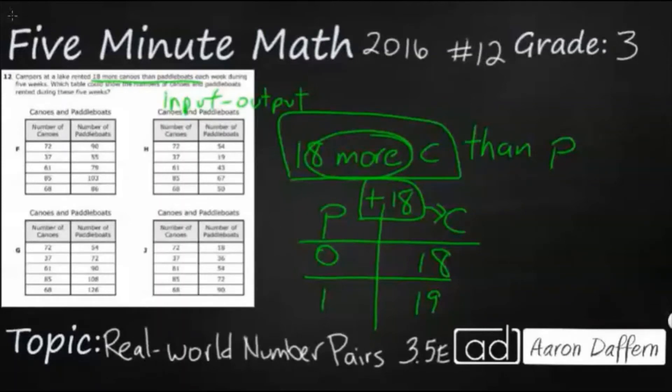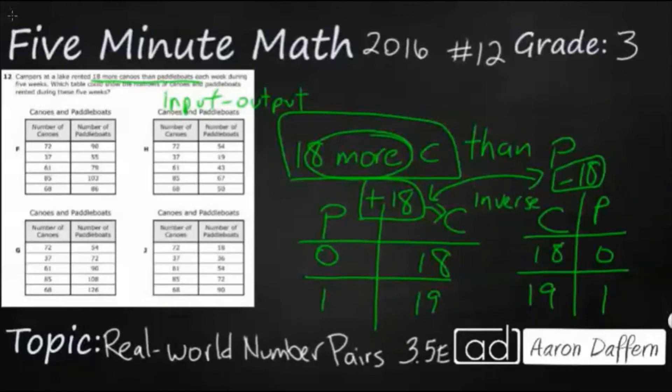Now I did that just because there's 18 more canoes than paddle boats. It made sense to start that way, but if I were to flip it, what happens if I were to do this? Take my same numbers, 18 and 0, 19 and 1, we can keep going. You notice now we've got a minus 18. So it just kind of depends on which direction we're going, but you've got your inverse operations here. These are your opposite inverse operations. So looking at our answer selections here, it looks like we've got canoes on the left, paddle boats on the right. We're going to use this right here. We've already decided we're looking for a minus 18 rule.